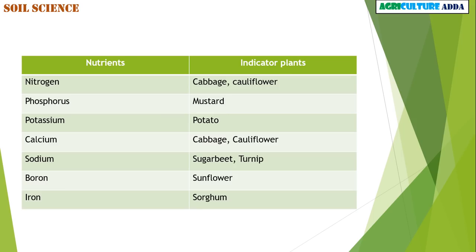These are the major nutrients and their indicator plants. For Nitrogen: Cabbage and Cauliflower. Phosphorus: Mustard. Potassium: Potato. Calcium: Cabbage and Cauliflower. Sodium: Sugar Beet and Turnip. Boron: Sunflower. Iron: Sorghum.